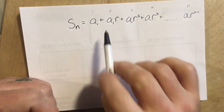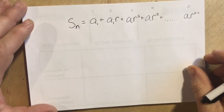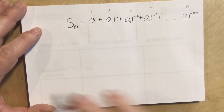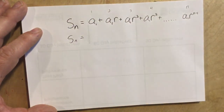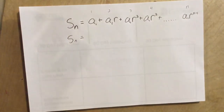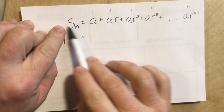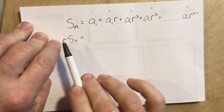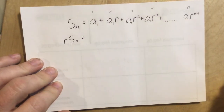Now, how do we get from there to the formula? I'm going to do a clever thing that some really clever person in history decided to try. We're going to write the sum S sub n again, except this time I'm going to multiply both sides by the common ratio r. It's an equation, so we need to multiply both sides by the same thing.